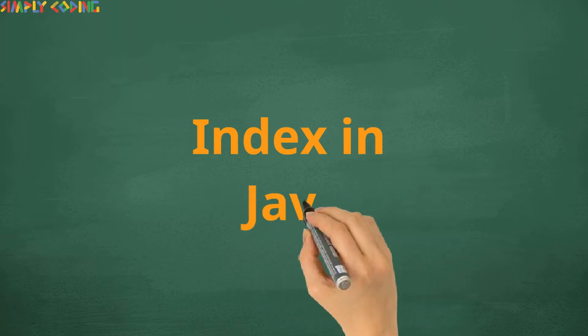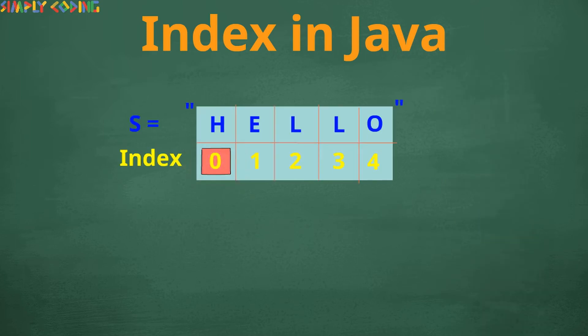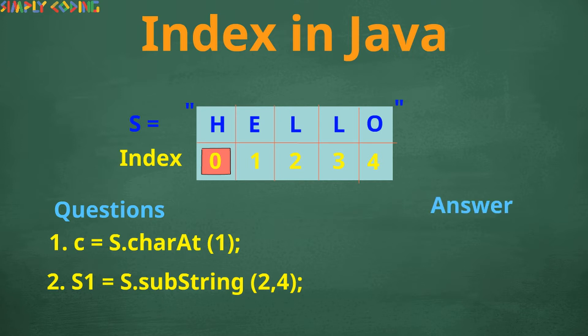The second set is where you are tested if you understand how index works in Java. Index starts from 0. You would be given a code sample which has methods which use index like charAt or substring. There you would have to correctly identify the final value printed.